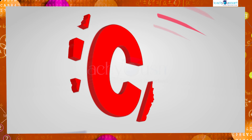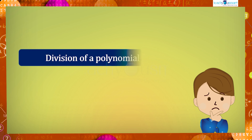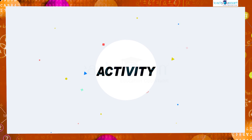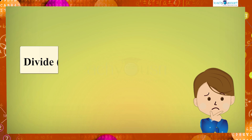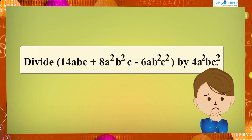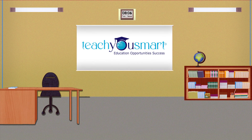So let's recall what we discussed today: division of a polynomial by a monomial. Before winding up, let's check how much you understood by doing an activity. Divide 14abc plus 8a squared b squared c minus 6ab squared c squared by 4a squared bc squared. That's all for now — see you all in the next class.